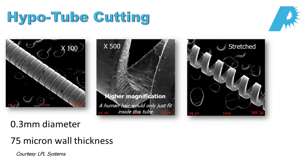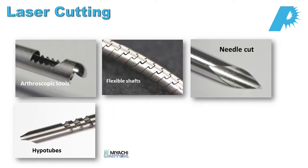We can also cut hypotubes. This is an interesting application, and this demonstration shows a spherical cut made into a hypotube, such that when you take the tube and pull on it, it expands into almost like a little spring. The tube itself is about 300 microns in diameter, and the wall width is about 75 microns.